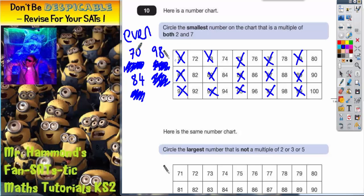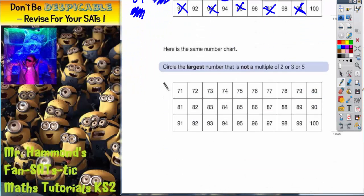70 is not in the list. Is 84? Yes it is. So they are the only two possible answers that are multiples of 2 and 7. However, it does say circle the smallest, so the only number I should have circled should have been 84 because that's the smallest one. If we get a different call for the next question, it says here's the same number chart.